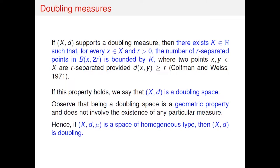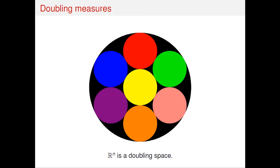The importance of this notion is that being a doubling space is a purely metric condition — it does not depend on the existence of a doubling measure. The doubling measure is further information. This result tells you that being homogeneous in the sense of having a doubling measure implies a geometric condition. What about the converse? In R^2 you can find at most 7 disjoint balls of radius 1/3 inside a ball of radius 1.